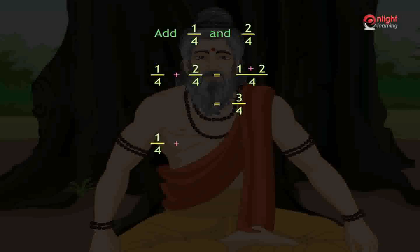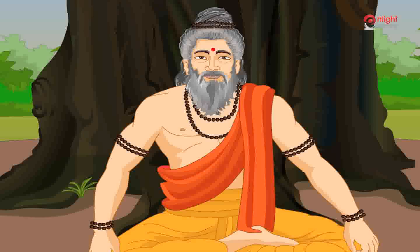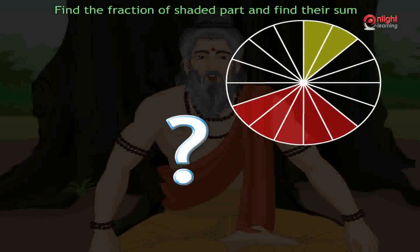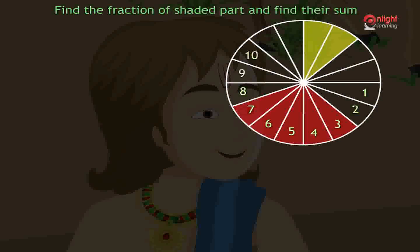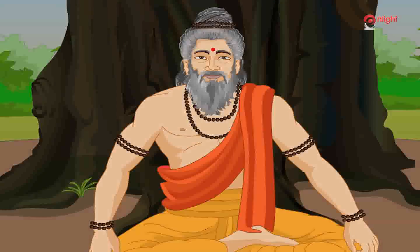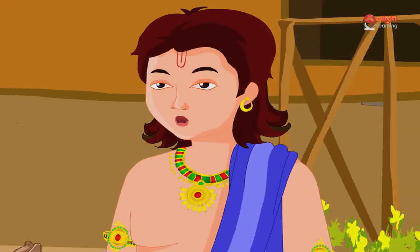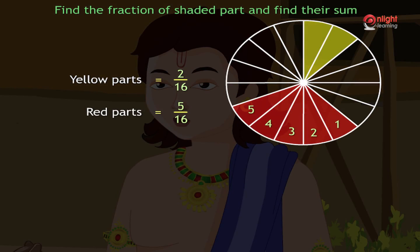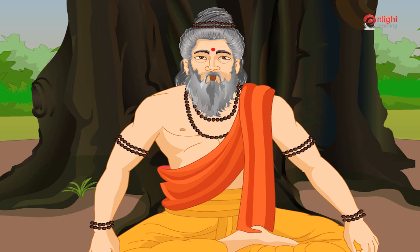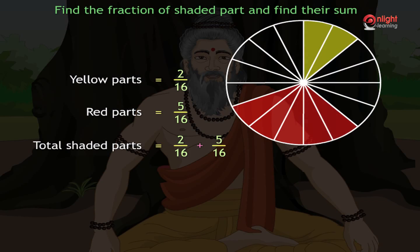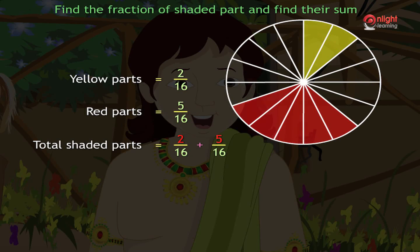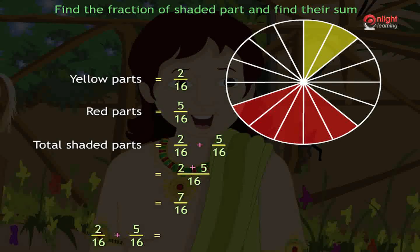Now in the given figure, find the fraction of the shaded parts and find their sum. The circle is divided into sixteen equal parts. Two parts out of sixteen is shaded with yellow color, so the fraction is two by sixteen. Now what is the fraction of the red shaded part? Five parts out of sixteen is shaded with red, so the fraction is five by sixteen. Let us now add two by sixteen and five by sixteen. We have to add only the numerators. Adding two and five we get seven. So we write seven over sixteen, the denominator. Hence the sum of two by sixteen and five by sixteen is seven by sixteen.